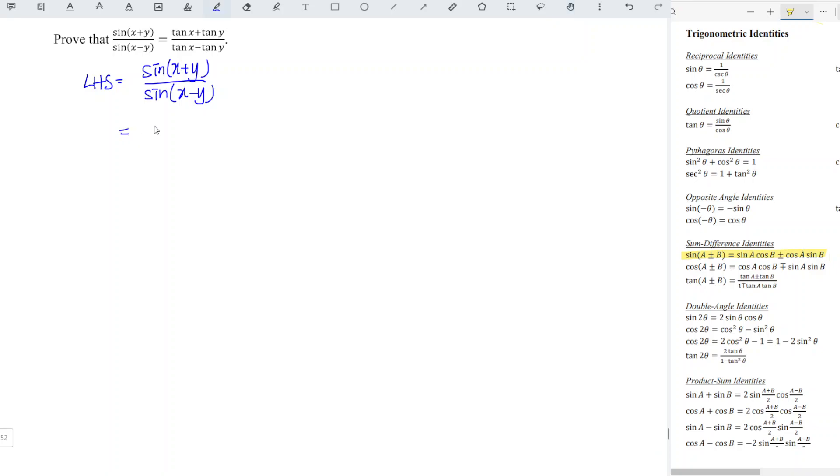the left-hand side. So we should have sine x cos y plus cos x sine y, divided by sine x cos y minus cos x sine y. And we should divide both the numerator and the denominator by cos x cos y